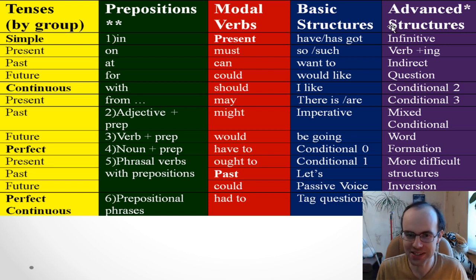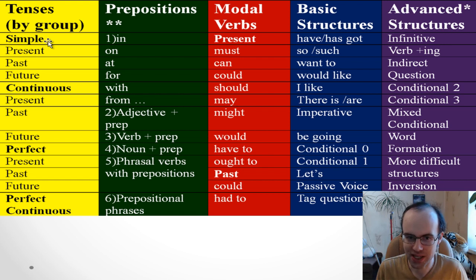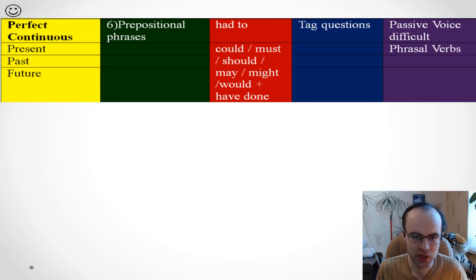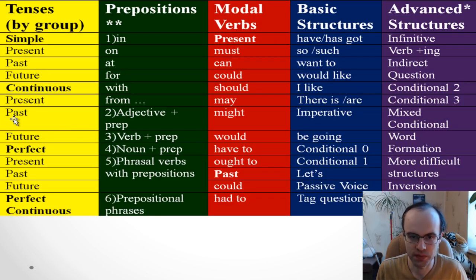Let's start with tenses. You see, if you look at the first column — tenses by group — you need to know four groups: simple tenses, continuous tenses, perfect tenses, and perfect continuous tenses. Each group has present, past, and future forms.